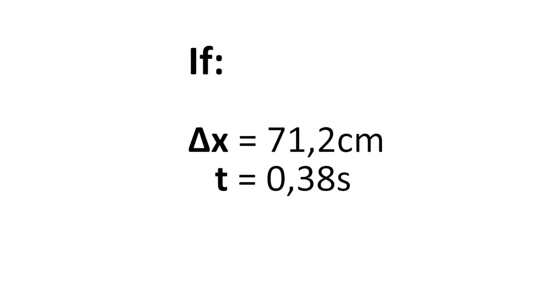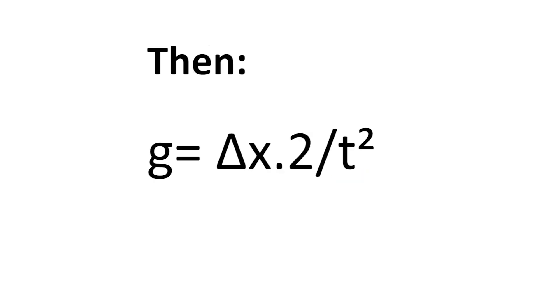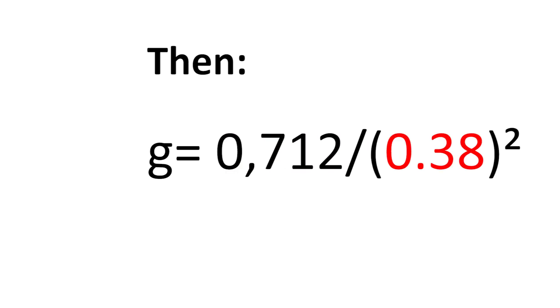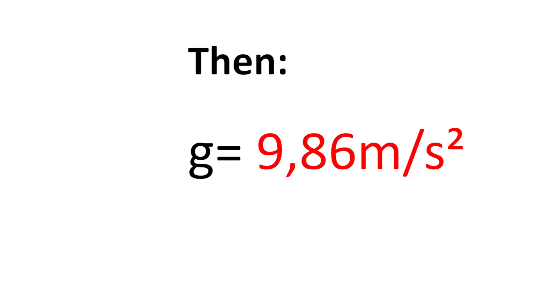Having completed the experiment, the results we obtained was for the displacement 71.2 centimeters, which will be 0.712 meters. Our time was 0.38 seconds for a quarter of a swing of the pendulum. Substituting these results into the equation, we will find that g was equal to 9.86 meters per second per second.